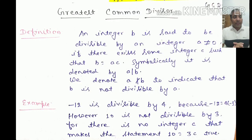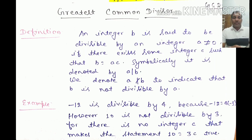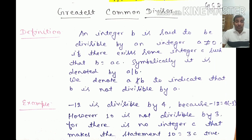Today we will study the topic of greatest common divisor. First we will see what is the condition for divisibility, and then we will define the greatest common divisor, that is GCD. An integer b is said to be divisible by an integer a, not equal to zero, if there exists some integer c such that b equals ac. We require a to be different from zero because if a equals zero, the denominator is undefined.